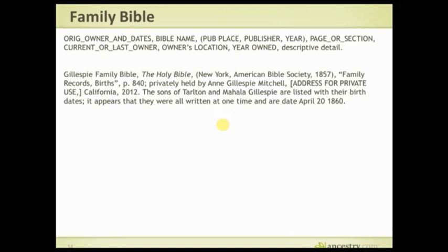For the Family Bible — and this format works for anything you privately hold, like a deed — you include the original owner, the Bible name, then in parentheses the publication place, publisher, and year. Then the page or section, current owner, owner's location, year owned, and a descriptive detail if desired. So my source is the Gillespie Family Bible — the Holy Bible, published in New York in 1857. The section quoted is 'Family Records Births,' page 840. It's privately held by me in California, currently owned in 2012, and then I include the description.